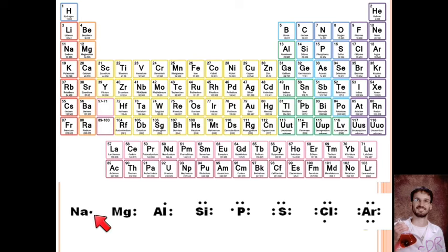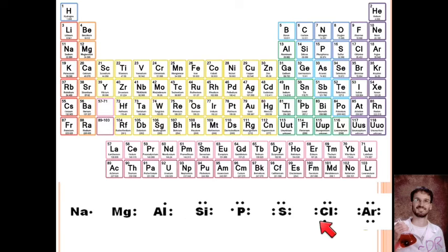Here we have element symbols and their Lewis dot structures. Sodium has one valence electron — there's one electron in its outermost ring, no matter how many rings are inside. Magnesium has two. Aluminum has three. Silicon, four. Phosphorus, five. Sulfur, six. Chlorine, seven. And argon has eight. Notice they write it with two dots on each of the four sides of the element symbol. Find these in the periodic table and see if you can figure out the pattern.